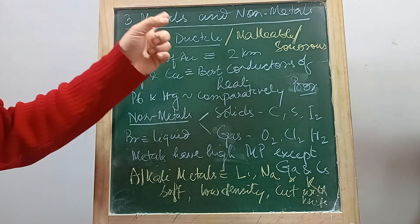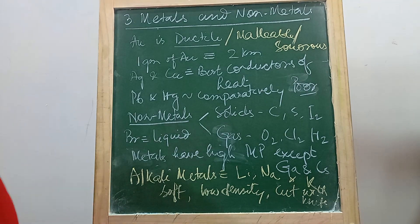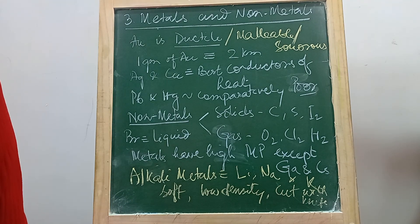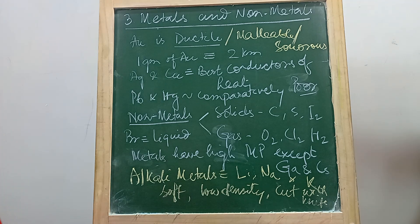Let's see lesson number three, metals and non-metals. We have more than 100 elements and these elements can be classified in two groups: metals and non-metals.